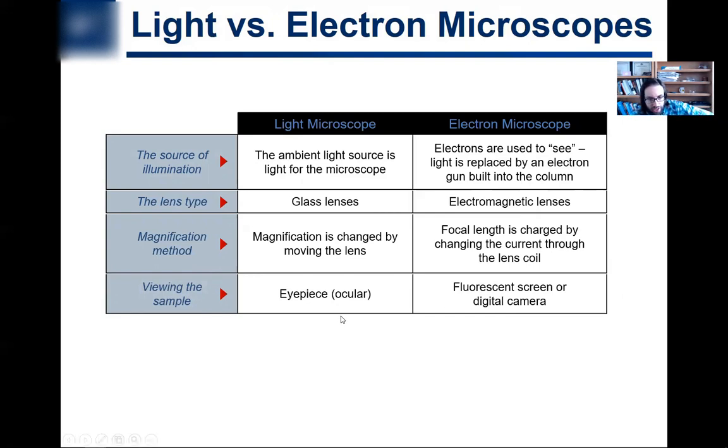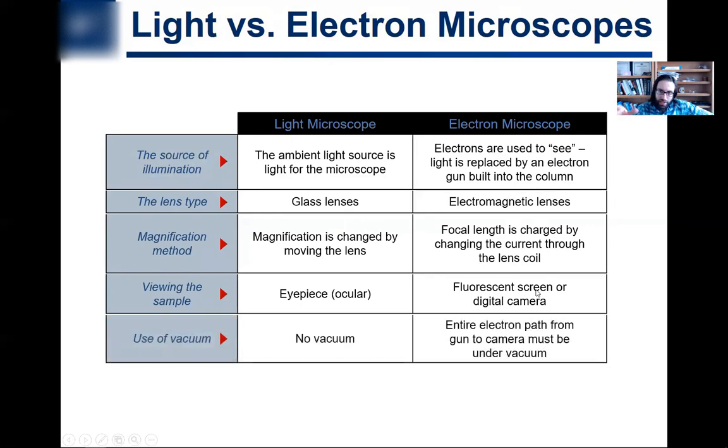How do you view the sample? With your eyes on the light microscope. In an electron microscope you're going to need a digital camera or commonly a fluorescent screen - electrons hit that screen and then fluoresce on some sort of material. Do you use a vacuum with a light microscope? No. In an electron microscope, this is why electron microscopes tend to be very very expensive - because the entire electron path from the gun where the electrons originated to the camera must be under vacuum.